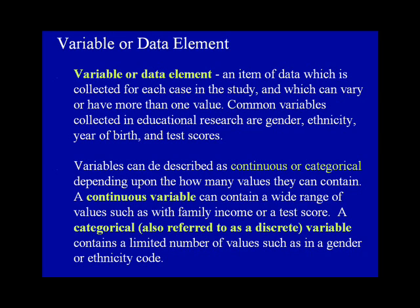Variables can be described as continuous or categorical depending upon how many values they can contain. A continuous variable can contain a wide range of values such as family income or a test score. A categorical, also referred to as a discrete variable, contains a limited number of values such as gender or ethnicity code.